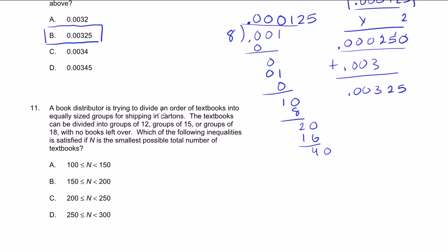A book distributor is trying to divide an order of textbooks into equally sized groups for shipping and cartons. The textbooks can divide into groups of 12, groups of 15, or groups of 18 with no books left over. So that means that the number of books we have is divisible by these three numbers. Which of the following inequalities is satisfied if n is the smallest possible total number of textbooks. So essentially, we know that n is divisible by these three numbers. And we want to find the least possible n that's divisible by these three numbers. Or essentially, the least common multiple of, let me write this down, n is equal to the least common multiple of 12, 15, and 18.